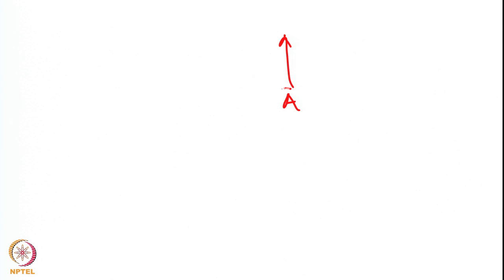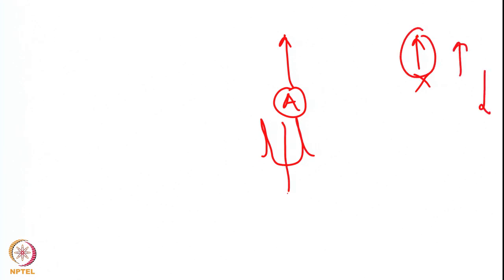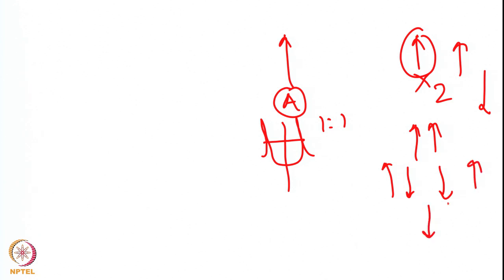To explain this physically: if there is one neighboring spin X, it can be either up or down, splitting A into 2 lines of equal intensity (ratio 1:1). If there are 2 equivalent X spins, their orientations can be up-up, up-down, down-up, or down-down, splitting A into 3 lines with ratio 1:2:1.